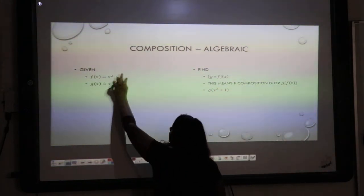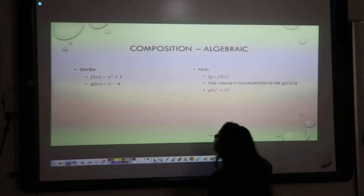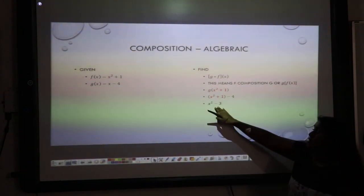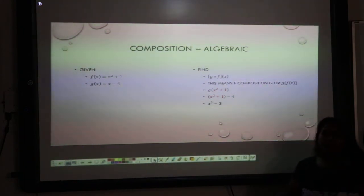I'm going to take this, which is right here, and place it every time I see an x in g of x. And I did that. I simplify, and I get x squared minus 3.